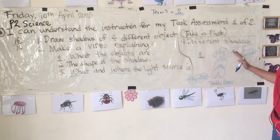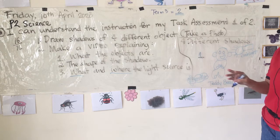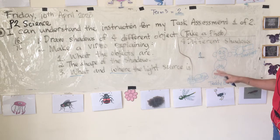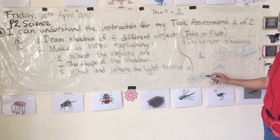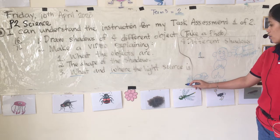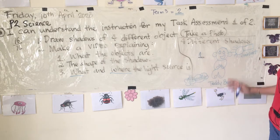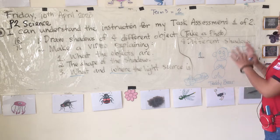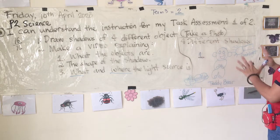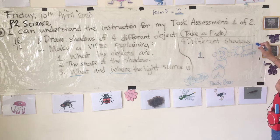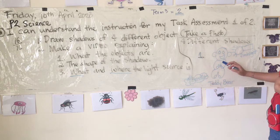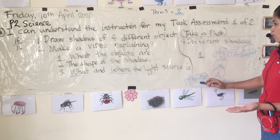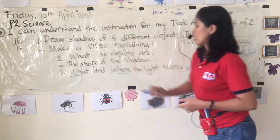So this is what your drawing will look like. You're going to choose four objects. Then you're going to describe the shape of the shadow — if the light is here, the shape is a little bit longer because it shines from here. So in my drawing, it should show what source of light I use, the name of the object, and its shadow. And in the video, I'm going to explain what the shape of the shadow is.